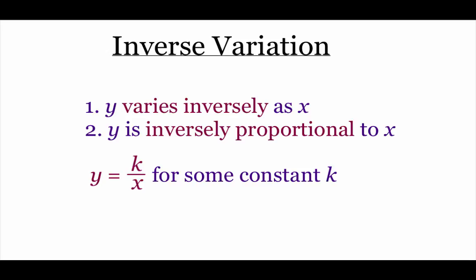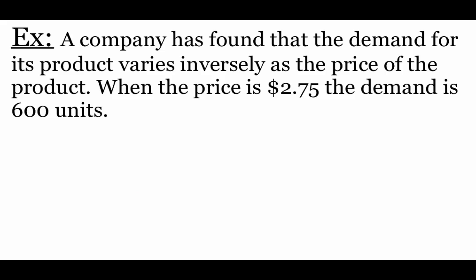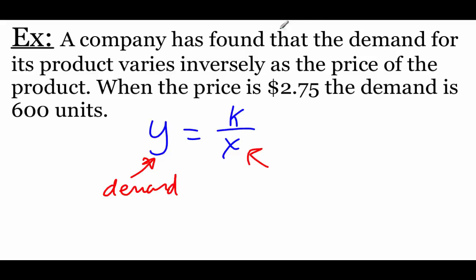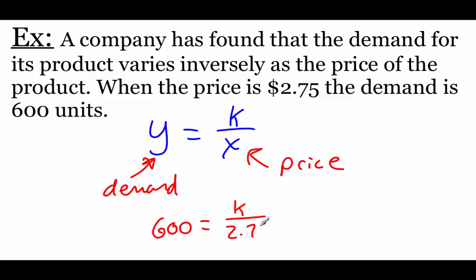The third type is inverse variation. We could say y varies inversely as x, or y is inversely proportional to x. The equation is y equals k divided by x. In this example, a company finds that demand for their product varies inversely as the price. When the price is $2.75, the demand is 600 units. So y represents demand and x represents price, giving us 600 equals k divided by 2.75.